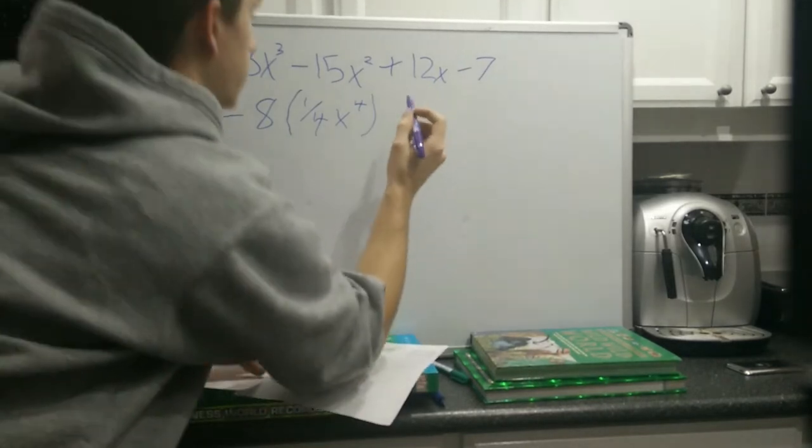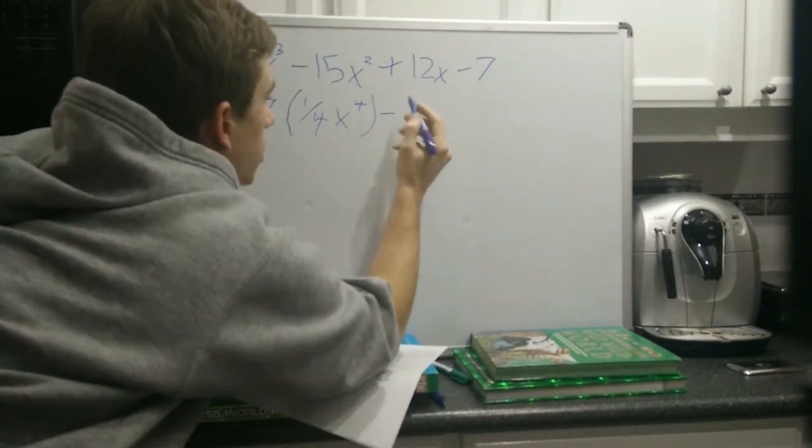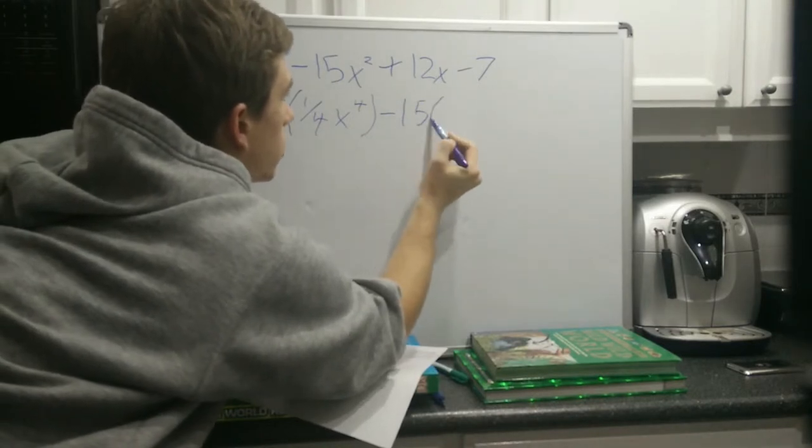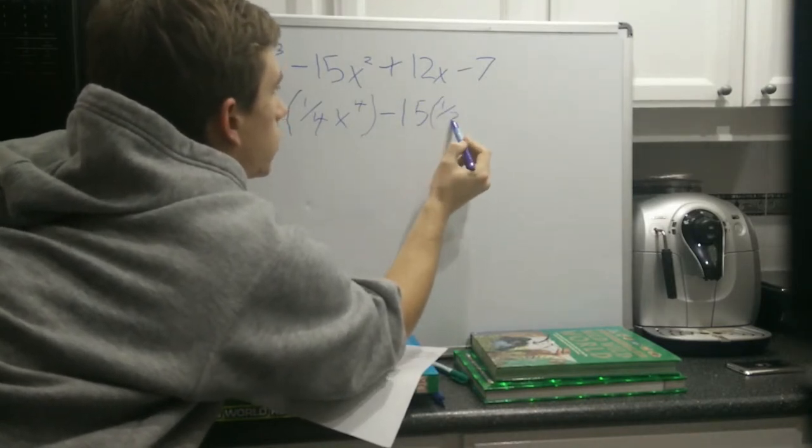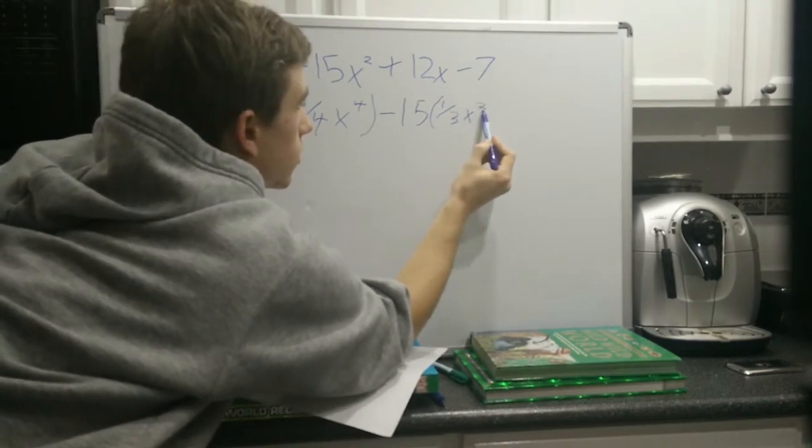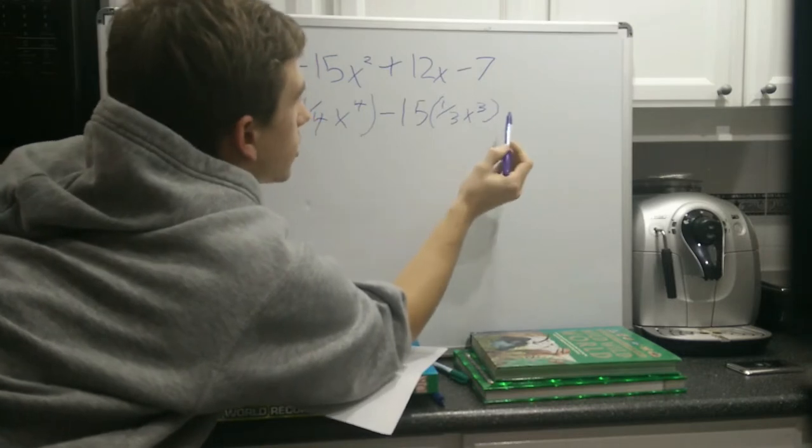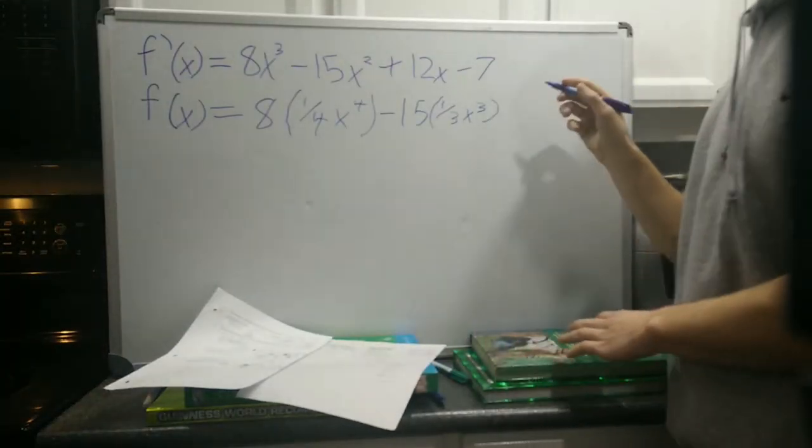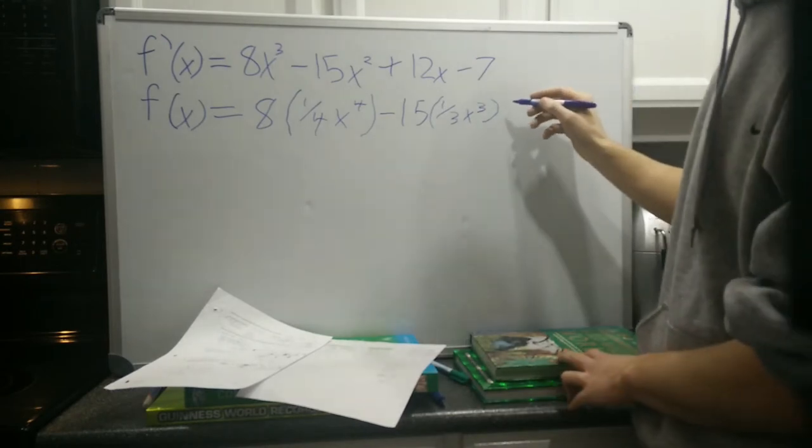15x squared, so minus 15 times 1 over 3x cubed. So you really can't sit still, can you? All right, I'm going to do a switcheroo. All right, and what do we have left?